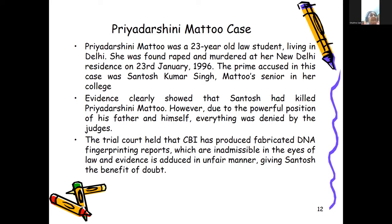Priyedarshini Mattu was a 23-year-old law student living in Delhi. She was found raped and murdered at a New Delhi residence on 23rd January 1996. The prime accused was Santosh Kumar Singh, Mattu's senior colleague. Evidence clearly showed that Santosh had killed Priyedarshini Mattu. However, due to the powerful position of his father and himself, everything was denied by the judges.